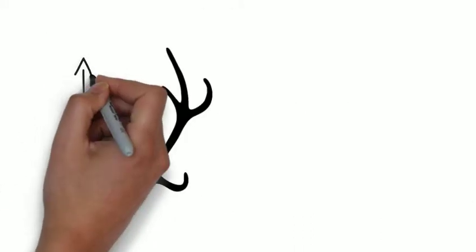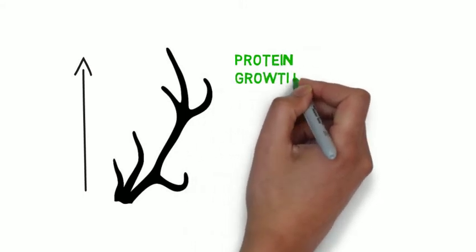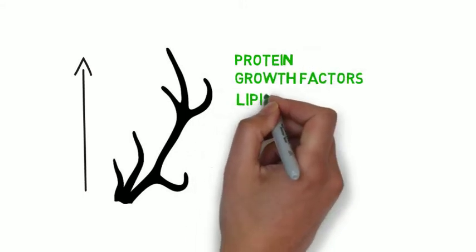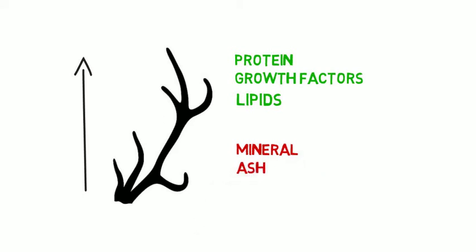Generally, moving from the base of the antler towards the tip, the protein and growth factor content increases, the lipid content increases, and the mineral and ash content decreases.